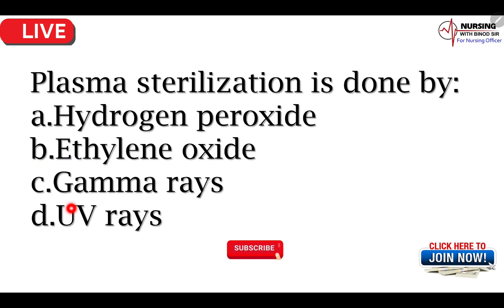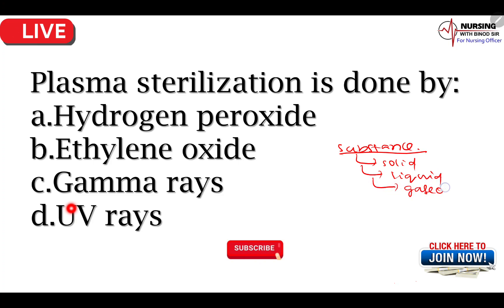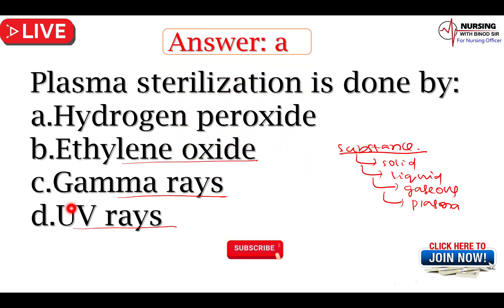Now we can come back to the next question। Plasma sterilization is done by — plasma, substance का एक state है जैसे solid state, liquid state, gaseous state, plasma state। Options: hydrogen peroxide, ethylene oxide, gamma rays, UV rays। किसके माध्यम से plasma sterilization करेंगे? तो यहाँ पर सही answer होगा hydrogen peroxide। Did you get it?